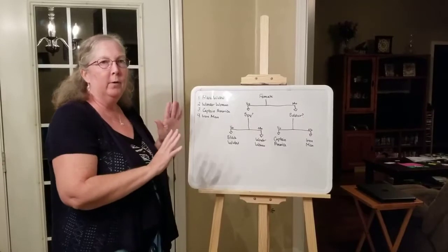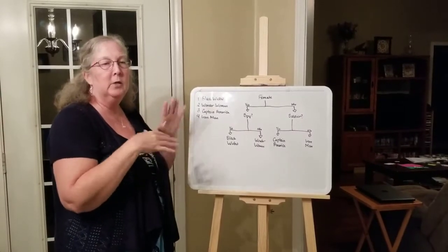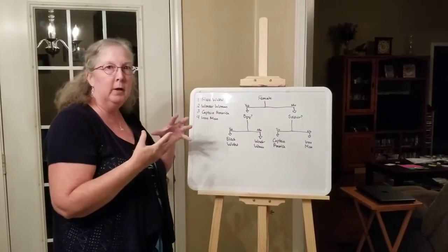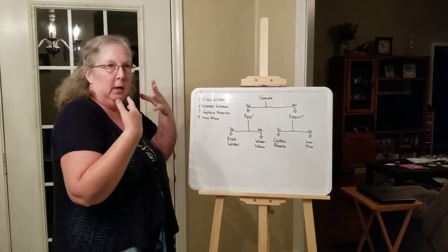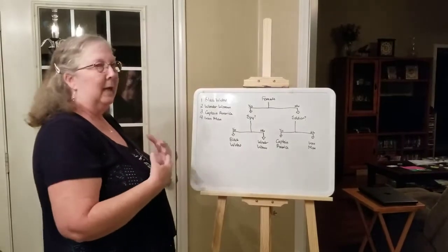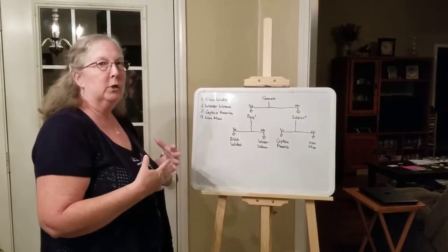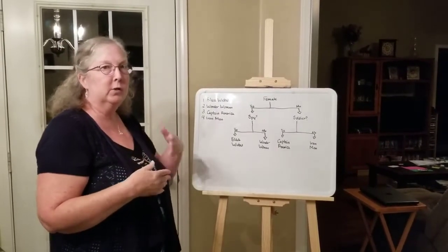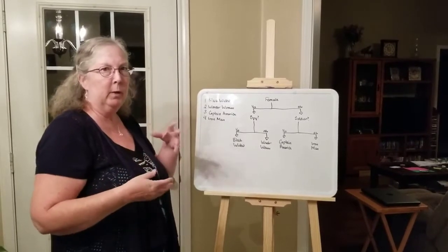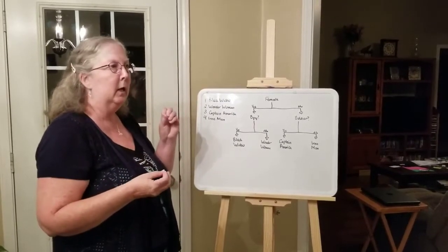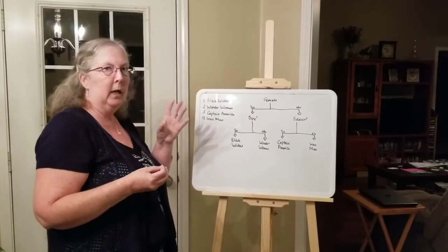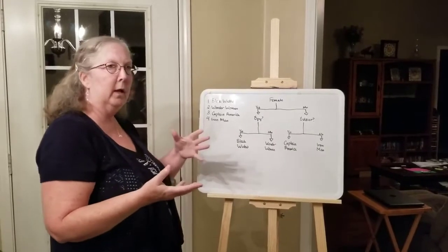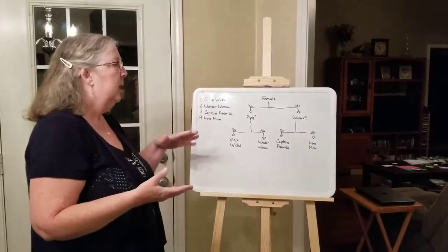Starting off on how to do a dichotomous key — I wanted to make something fun to help get the idea of what we're going to do. We're going to ask yes or no questions. It's kind of like a game you played as a kid — a guessing game, 20 questions. It has to be yes or no. It's kind of that idea.